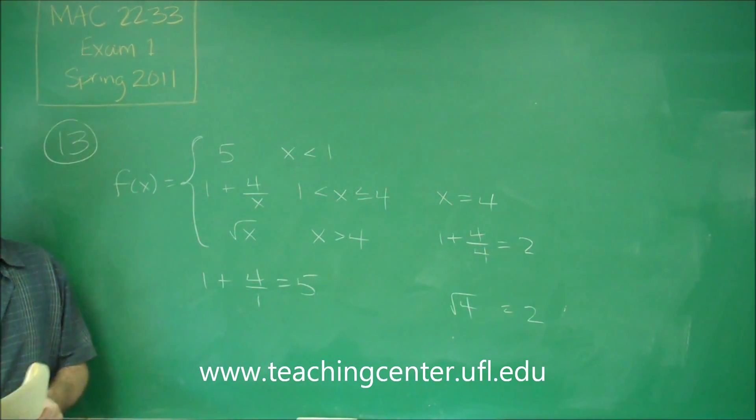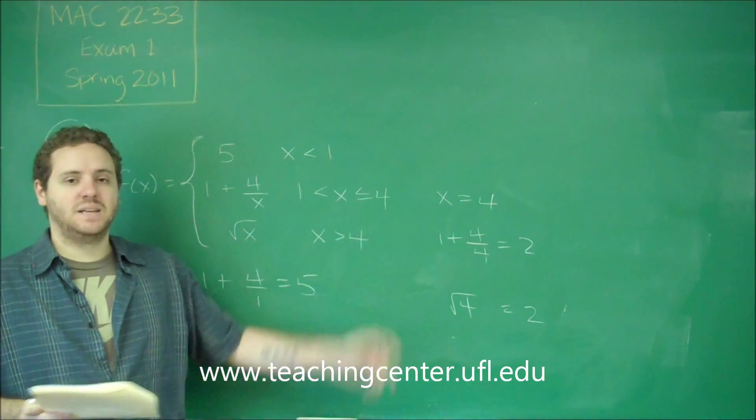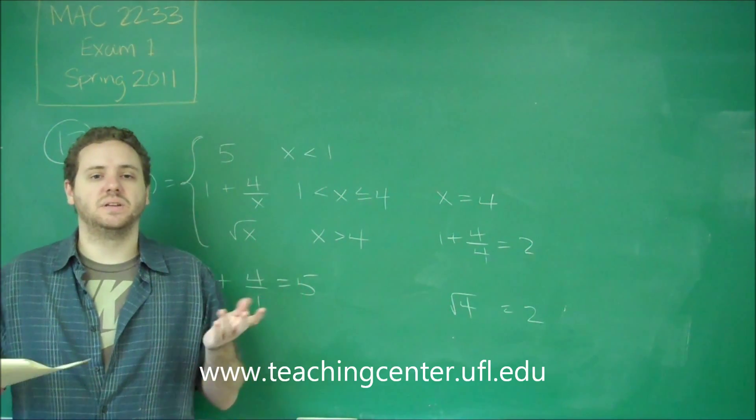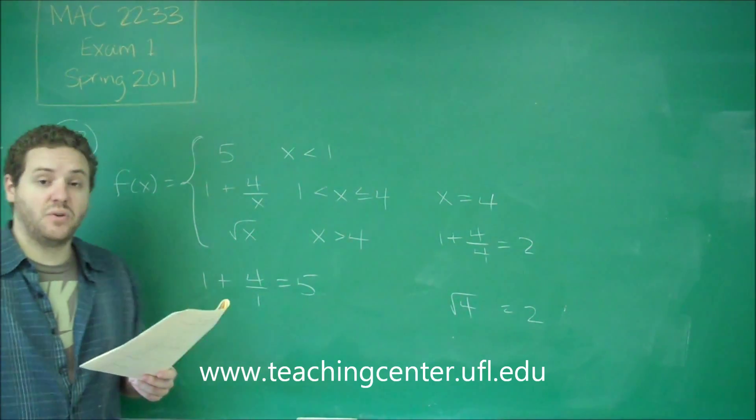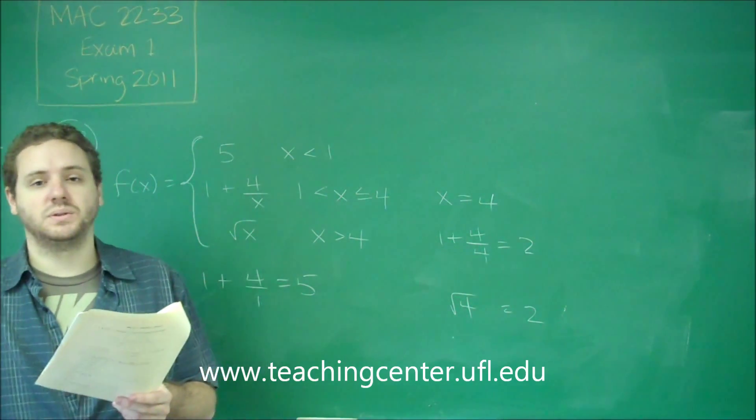They meet at the same y value, and one of them has an equal sign. So this is actually just a perfectly continuous part of the graph. There's no discontinuity there at all. So having non-removable discontinuity, that is false. We don't have any non-removable discontinuities.